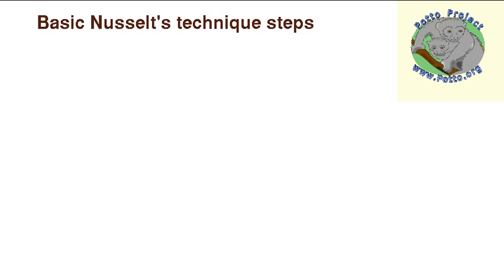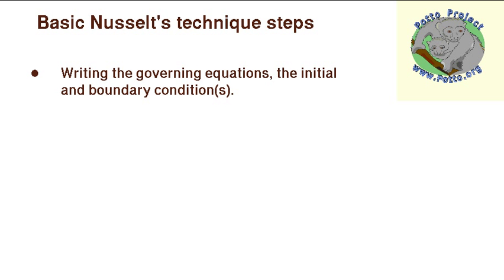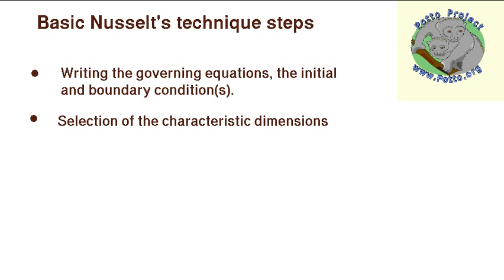Basic Mussel technique involves three basic steps. The first step is writing the governing equation and the initial and boundary conditions. The second step is selection of the characteristic time or characteristic dimensions, which is normally the most complicated step of all. The third and last step is the conversion process, which is a very technical part but I consider to be the simplest part.